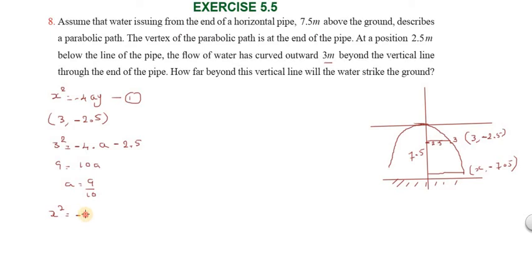-4 times the a value, -4 × 9/10 × y. x² = -36/10 × y. Simplifying, x² = -18/5 × y.